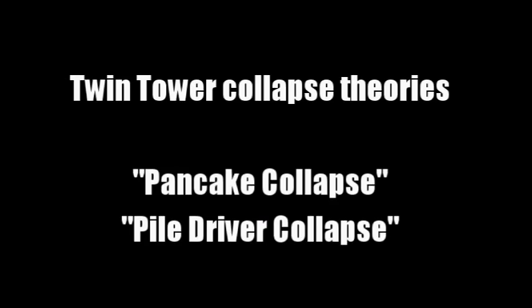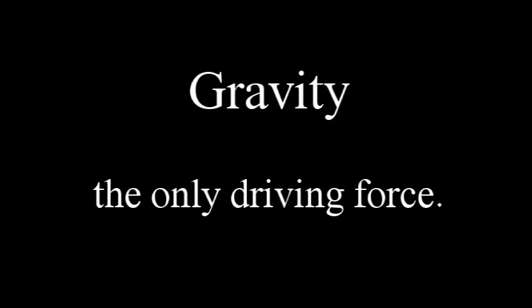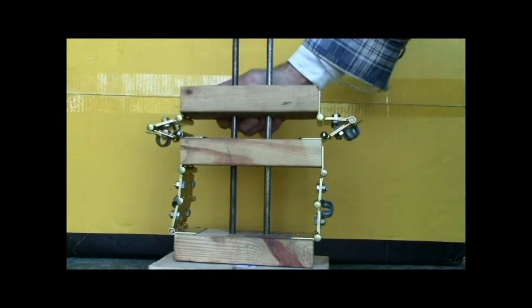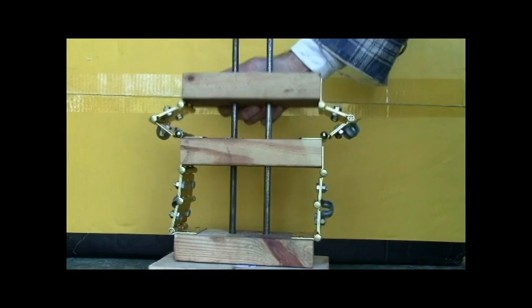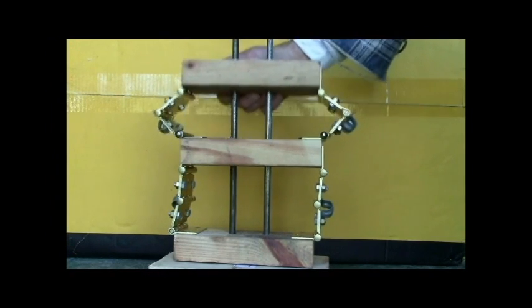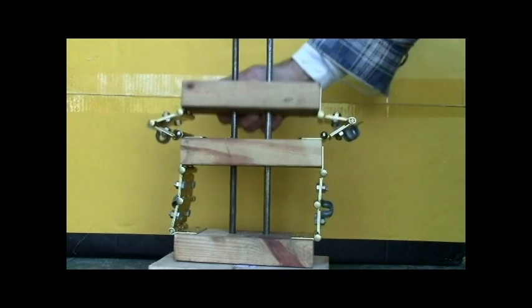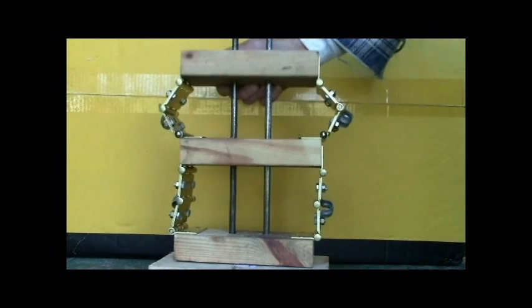There were two primary theories that were promoted: the pancake collapse and the pile driver collapse. Both rely on gravity to be the driving force for the two motions — in other words, the force and motions were down then out. Let's conduct some experiments to verify this, but first we need to understand some basics about building design.